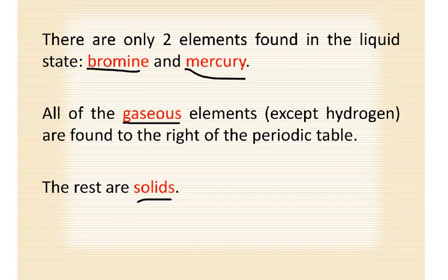So we have hit the end of our notes. There are no practice problems because there are no problems on this. Tomorrow we are going to color the periodic table — metals, metalloids, and nonmetals. Hopefully next week we get to do our lab, where we're basically going to test the properties of certain materials and you're going to tell me whether it's a metal, nonmetal, or metalloid based on its properties. Have a good night. Bye.